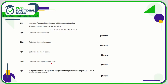Question number 2. All these questions now are calculator questions. For the mean, we're going to add all of these values together and divide by 15 because there are 15 values in total. When you add them up, you get 105. 105 divided by 15 is 7, so the mean is 7.